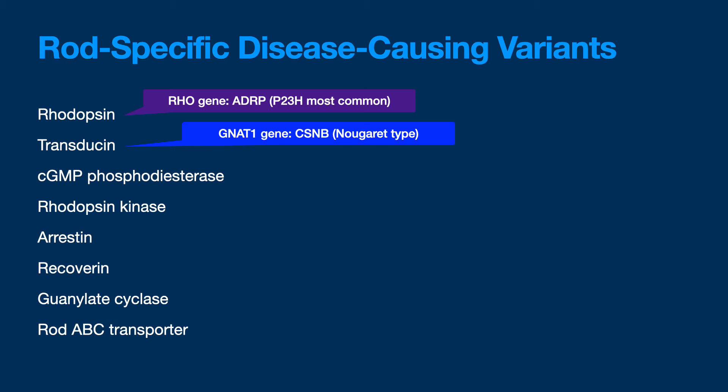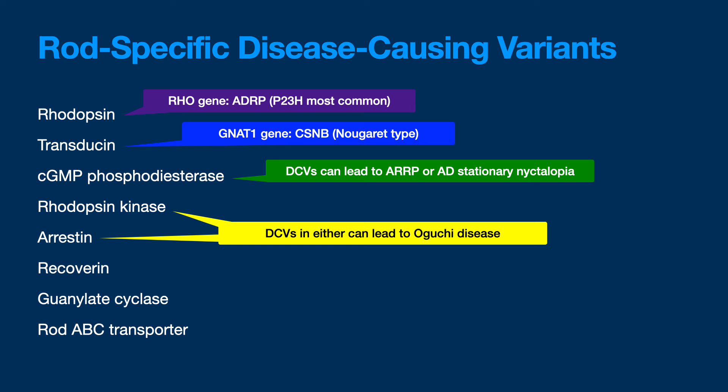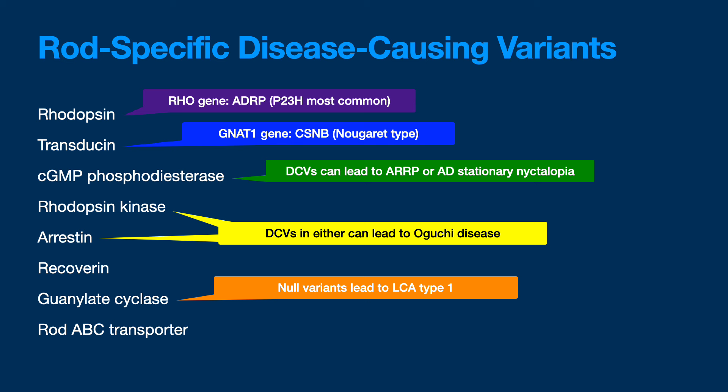Transducin can lead to congenital stationary night blindness. Autosomal recessive RP can be caused by cyclic GMP phosphodiesterase deficiency. Rhodopsin kinase and arrestin can both lead to Oguchi disease — which is the one where the fundus looks different depending on whether it's been in the dark or the light. Guanylate cyclase can lead to LCA type 1. ABC transporters — anyone? That's Stargardt disease. If more severe, it can lead to more of an RP-type presentation.